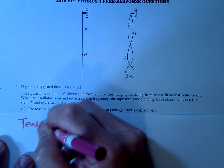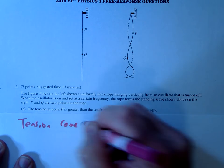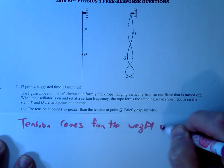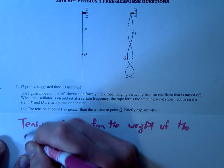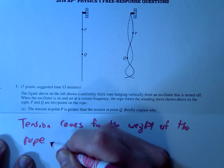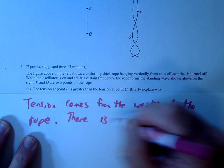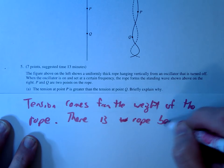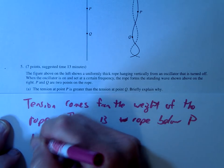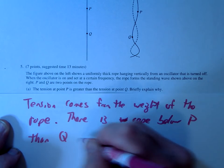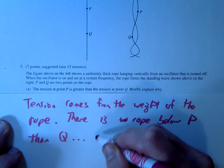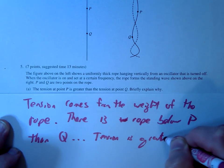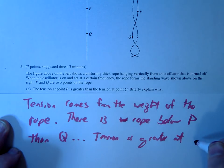So again we could write it something like this. Tension comes from the weight of the rope. And there is more weight or rope below P than Q. Therefore tension is greater at P.